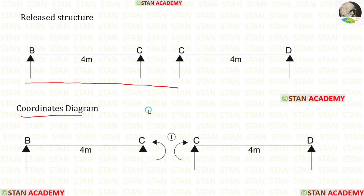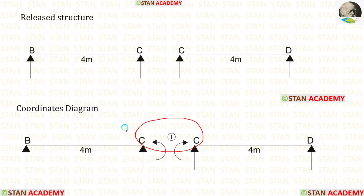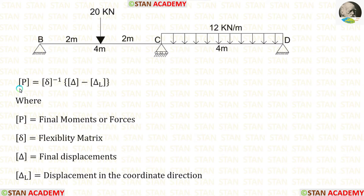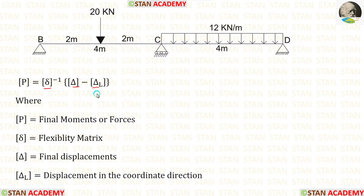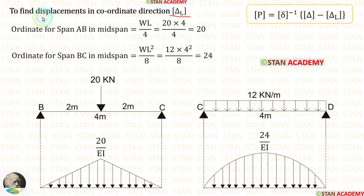Now let us make the coordinates diagram. In this analysis, there is only one coordinate, located at point C, because at point C we have removed MC. We know the formula to calculate the final moment MC: P matrix equals delta matrix inverse multiplied by (delta matrix minus delta L matrix). Inside these matrices, there will be only one value since there is only one coordinate. First, let us calculate the delta L matrix, which represents displacements in the coordinate direction. Since we have removed the moment from point C, the displacement here is the slope at point C.